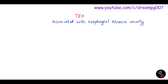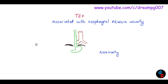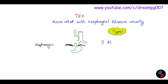Normally, the esophagus goes through the diaphragm and the trachea is normal. Now let's look into the types of tracheoesophageal fistula. The first type is esophageal atresia with proximal fistula.